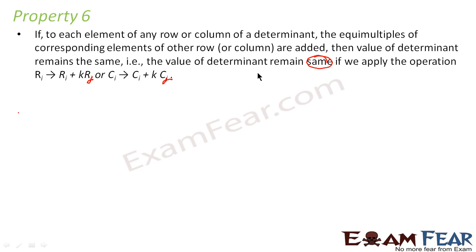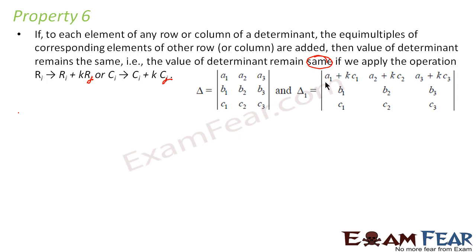I can explain and prove this to you. For any row, you add the row with some other row by multiplying that other row with some constant. Or you take a column, multiply a second column by some constant, add it to the first column, and replace the first column — then the determinant value doesn't change. To prove this, let's assume we have one determinant where row 1 is nothing but row 1 plus k into row 3. With this operation, a1 becomes a1 plus k·c1, a2 becomes a2 plus k·c2, a3 becomes a3 plus k·c3. The other elements are the same.